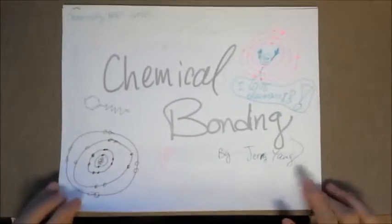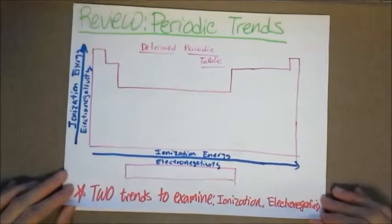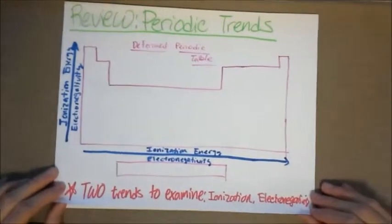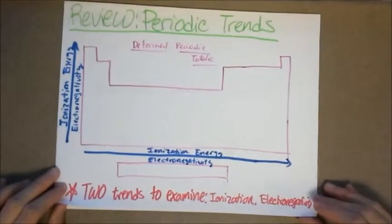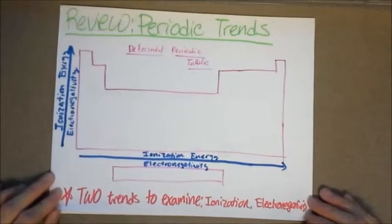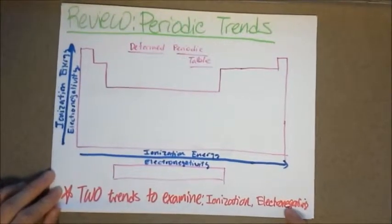Today we're going to talk about some types of chemical bonds. So before we look at these chemical bonds, we need to review some periodic trends. We're going to look at two key periodic trends, ionization energy and electronegativity.